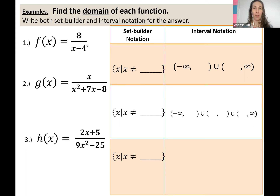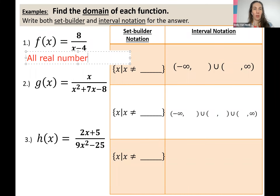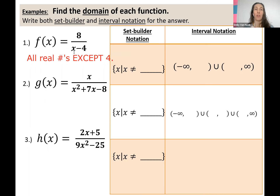So the domain would be all real numbers except for four. I'm going to type that off to the left here, then we'll fill in our little table. So we would say all real numbers, except for four. That's one way to describe our domain, because four is the one number that would make the denominator zero, and we can't have a denominator of zero — that would mean our expression is undefined.